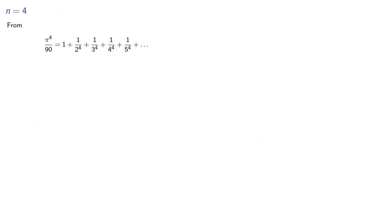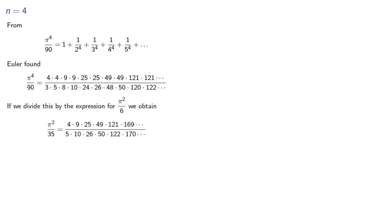For example, from the sum of the reciprocal 4th powers, Euler found a product form. And if we divide this by the expression for pi squared over 6, we obtain another result. Euler didn't give the details but we can fill them in. From the product form of the sum of the reciprocal 4th powers we have the expression.